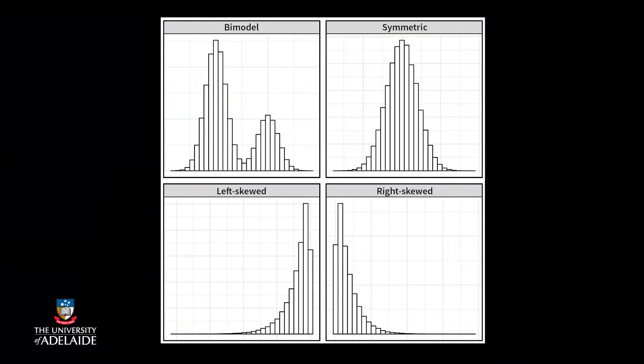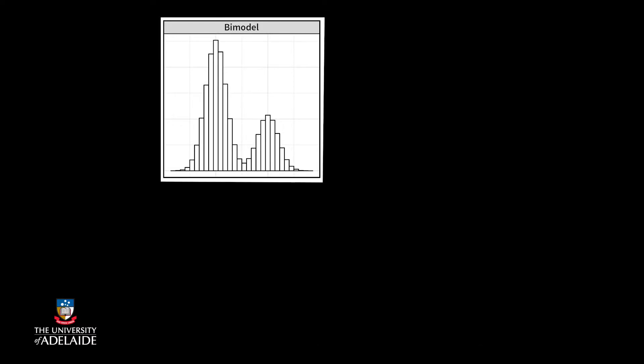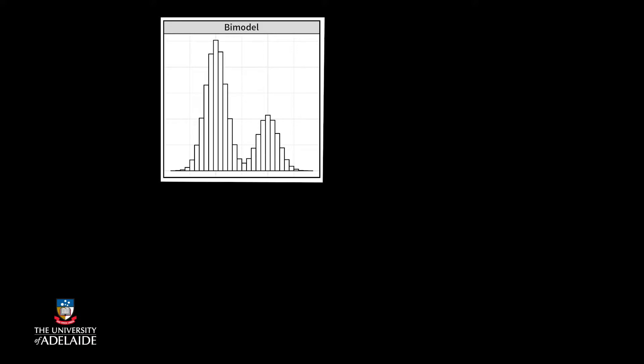Shape is easiest to see with histograms. These scatter plots illustrate some of the things you might consider. First, how many peaks? If it has two, we call it bimodal, while just one is unimodal.